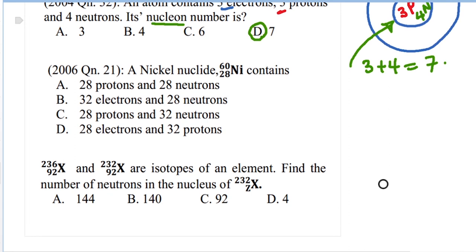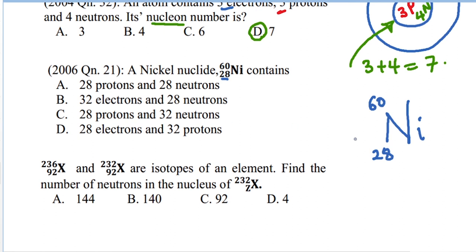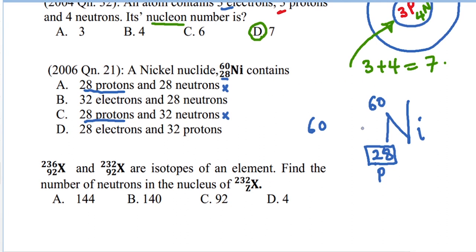For the nickel nuclide with atomic number 28 and mass number 60: the atomic number gives 28 protons. To find neutrons: 60 minus 28 = 32. So the nickel nuclide has 28 protons and 32 neutrons. The answer is C.